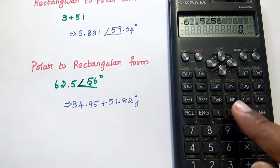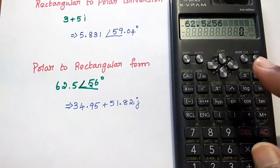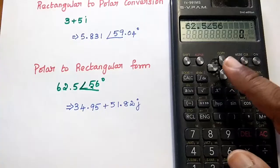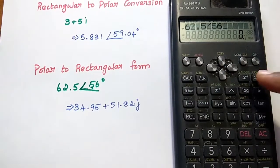Then give the value as 56 degree. Simply press the value 56. Then we want to convert this polar form into rectangular form.